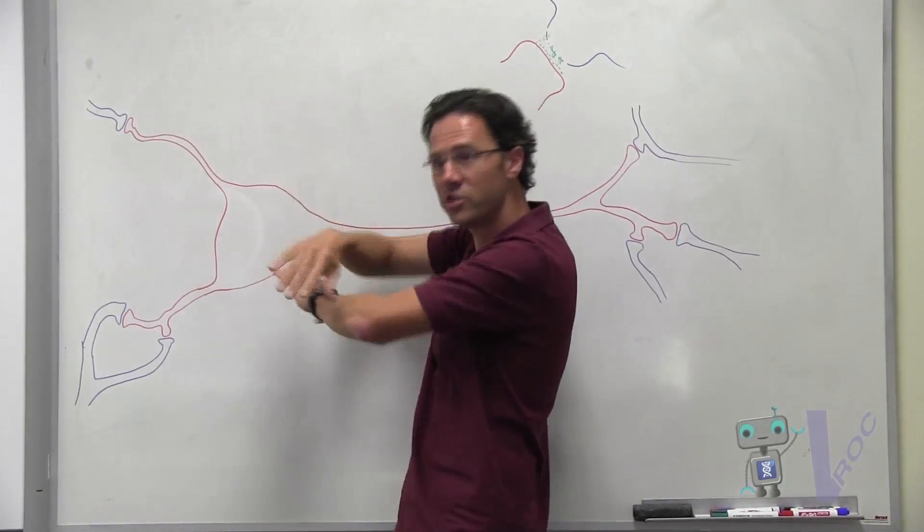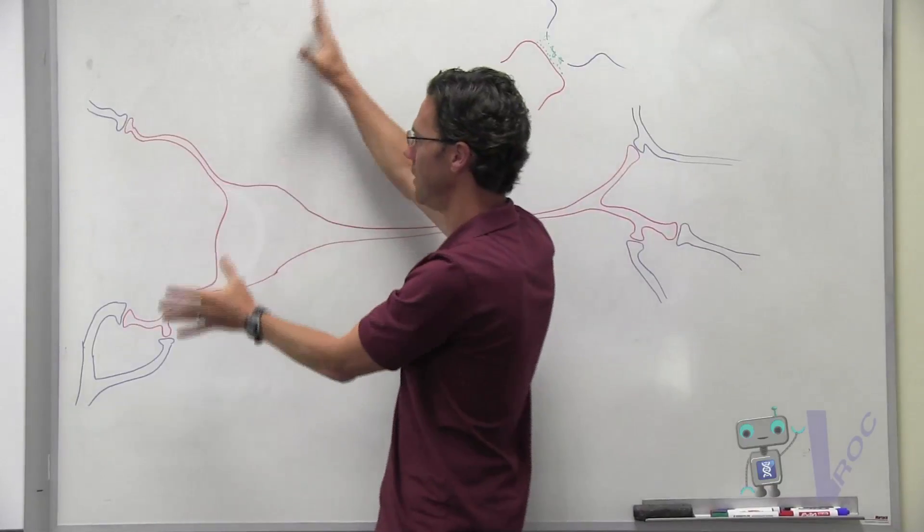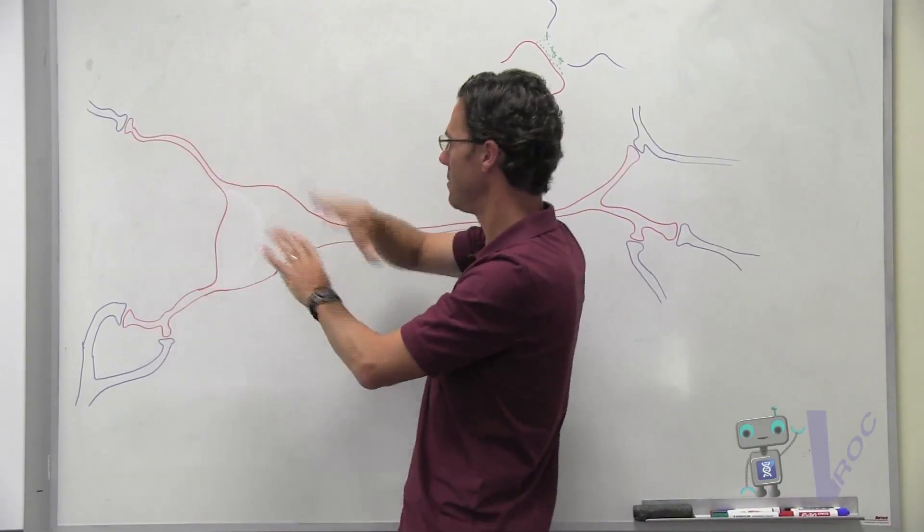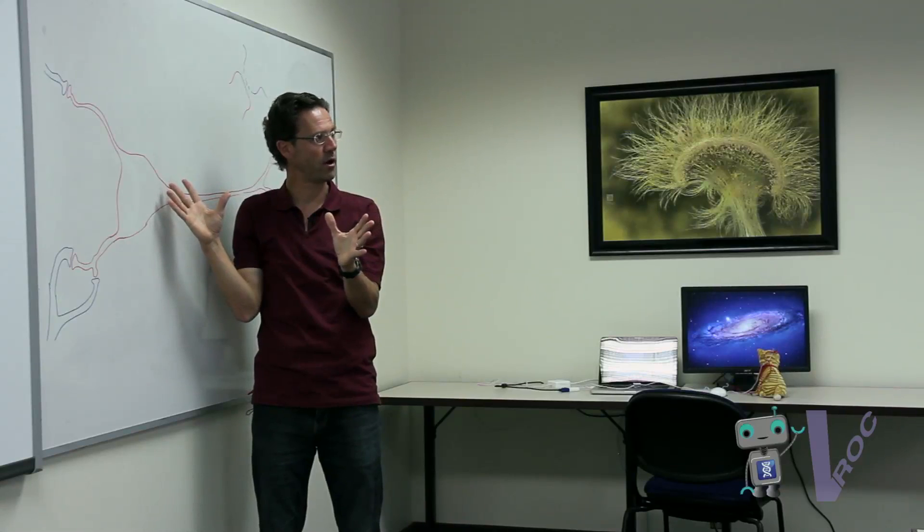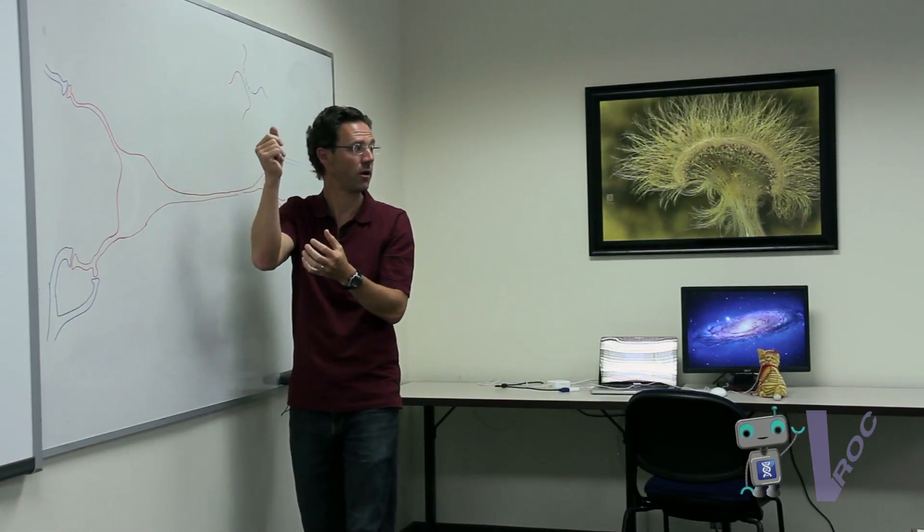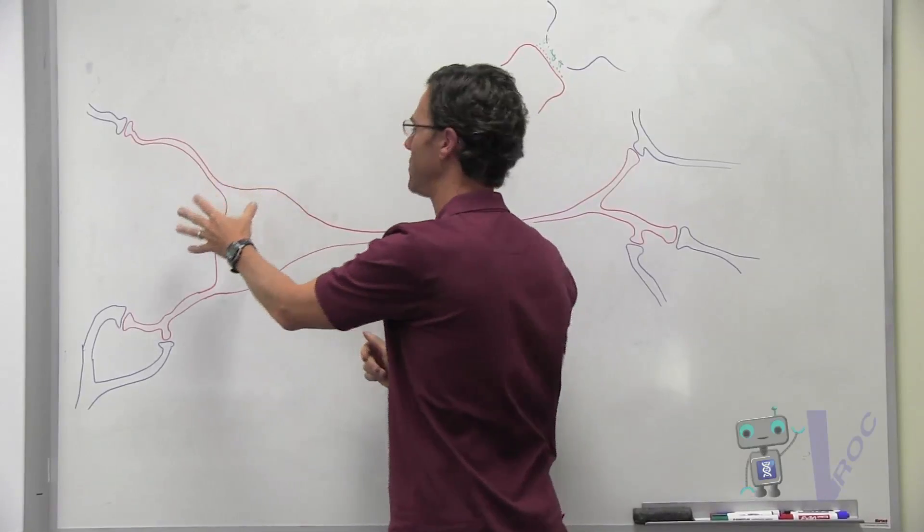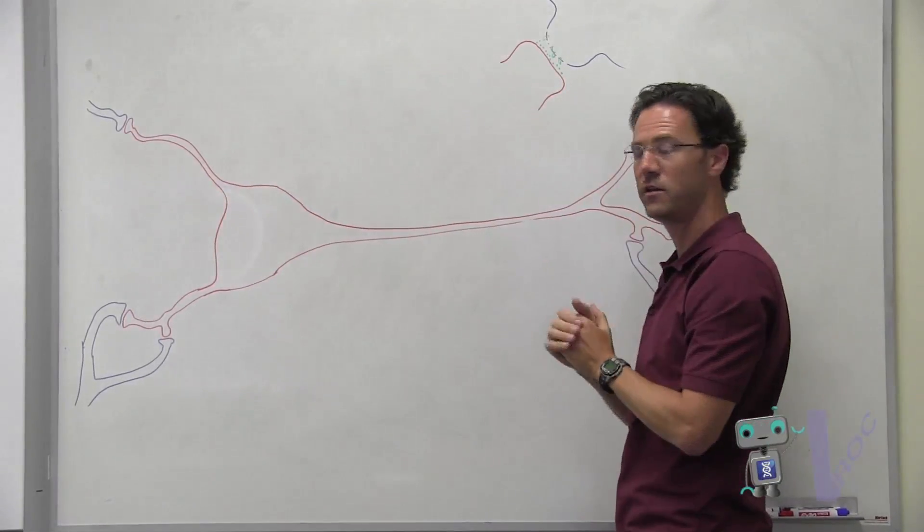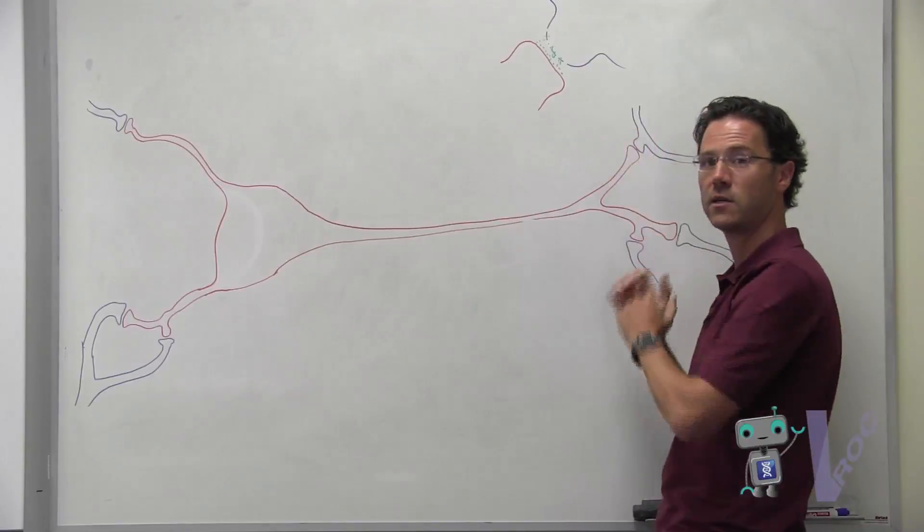an entire change happens. All these gates open and other gates close, and you get this massive change in the membrane behavior. It's like a spark—a spark of electricity called an action potential—and it fires it down its axon. That's what gets passed to the next neuron.